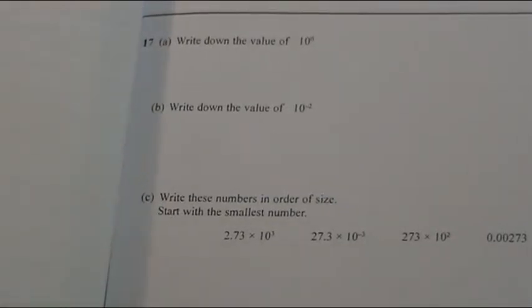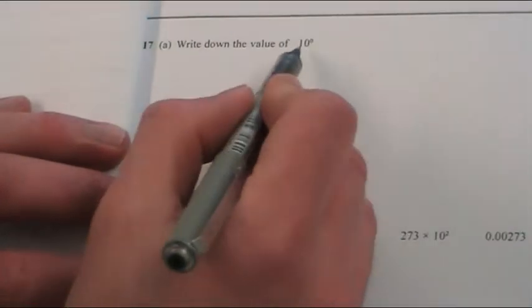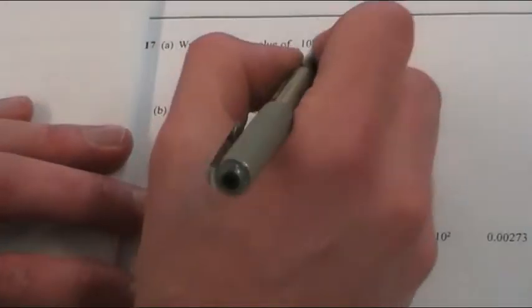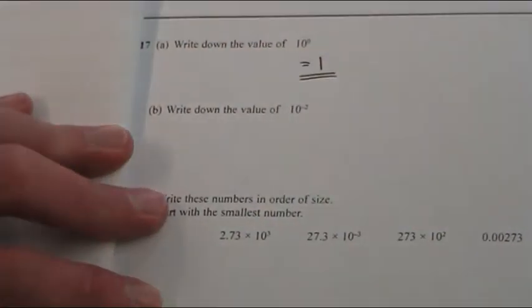Question 17 is all about indices. So for part A, we're told that what is 10 to the power of 0. And anything to the power of 0 is always 1. It's the easiest mark on the test.